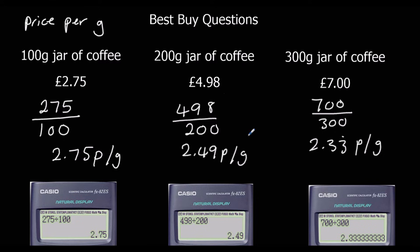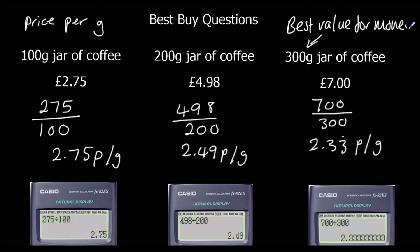The best value for money is the lowest price, so the 300 gram jar is the best value for money. Sometimes in exams you're asked to write a conclusion sentence, so you'd write: 'The 300 gram jar of coffee is the best value for money.'